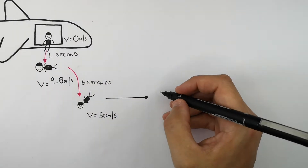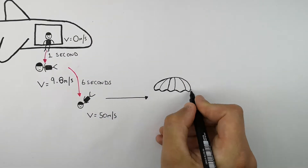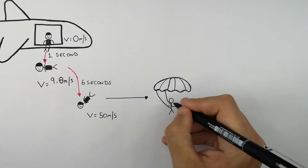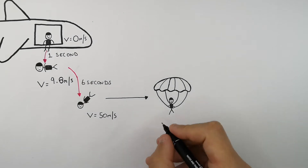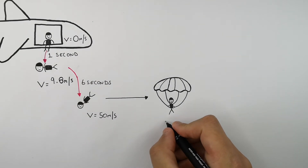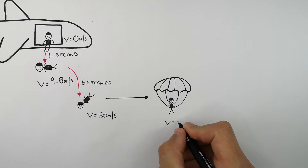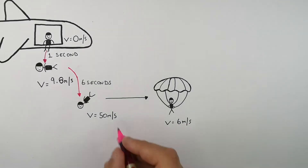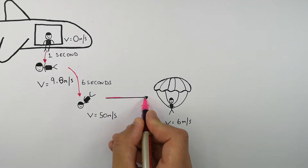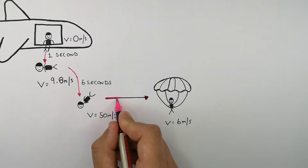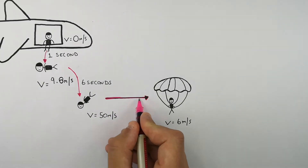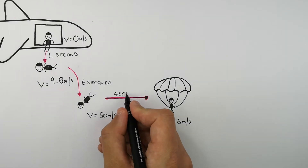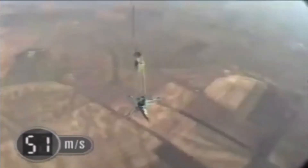After some time of skydiving, when it gets to the right point, they're going to pull their parachute open. At this point, they're going to decelerate — decreasing their velocity from 50 meters per second to 6 meters per second. Their initial velocity is 50 meters per second, and they decrease to a final velocity of 6 meters per second. It takes them 4 seconds to decelerate.